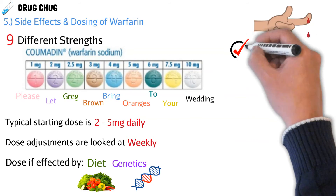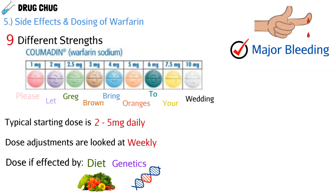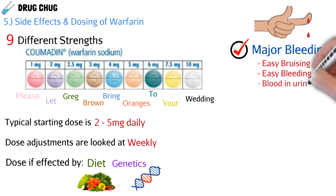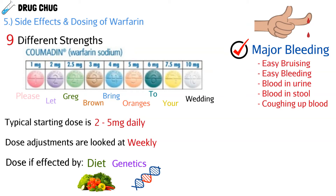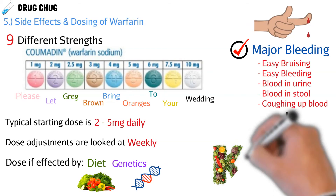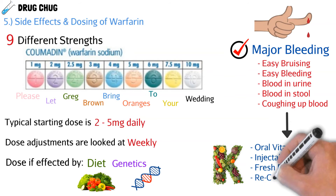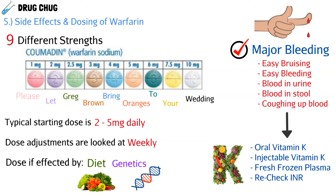The major adverse effect is a major bleeding event — this is a black box warning for warfarin. Patients may experience easy bruising, easy bleeding — for example, a paper cut that won't stop bleeding. More serious signs include blood in the urine, blood in the stool, or coughing up blood. If the INR is dangerously high, we can give oral or injectable vitamin K. A quick emergency fix is fresh frozen plasma, which already contains clotting factors. Recheck the INR consistently to maintain therapeutic range.